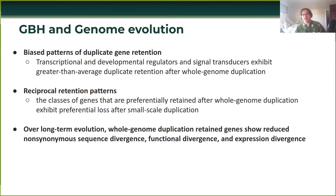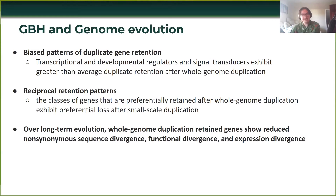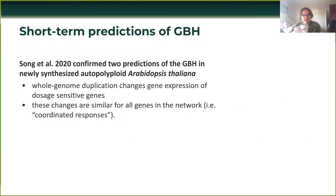Combining this together and looking across the angiosperm phylogeny, research has shown that over long-term evolution, whole genome duplication-retained genes show reduced nonsynonymous sequence divergence, functional divergence, and expression divergence. So these are the long-term evolutionary implications.